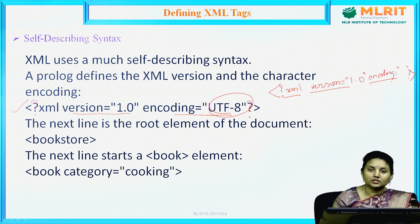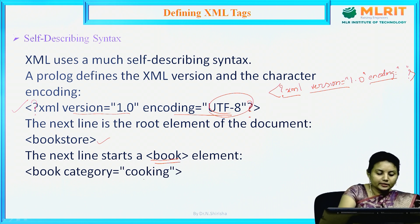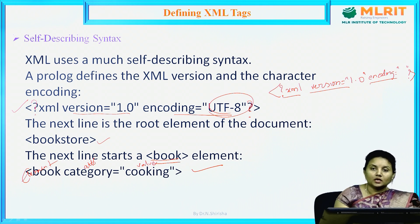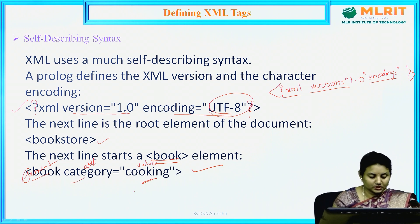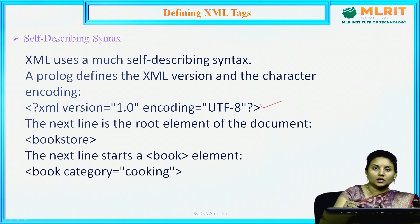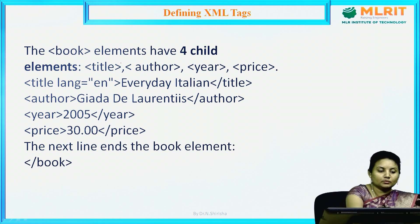The root element of the document — we saw the bookstore tree structure in the last session. In that, bookstore is the root element and book is an element. If you write book with a category attribute, then book is the element, category is the attribute, and cooking is the value. This is how we write XML code along with the prologue statement. The book element has four child elements.